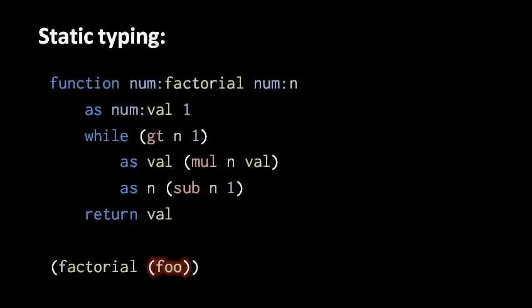To sum up: if programmers are required to declare the types of values returned by functions, the types of parameters, and the types of all other variables, then it can be programmatically determined ahead of time what kind of value every single expression is going to evaluate into at runtime. Therefore, we can programmatically detect any type errors before the program is run.